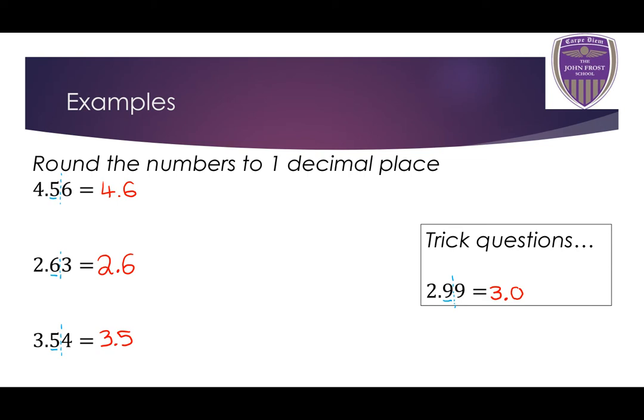Now, normally we never write numbers with a 0 in the decimal place, and you're absolutely right. But when you're being asked to round a number to one or two decimal places, if the decimal in the answer is 0, you do have to leave it in. That shows whoever is reading your work that you have correctly rounded to one decimal place and that the first decimal place is a 0.